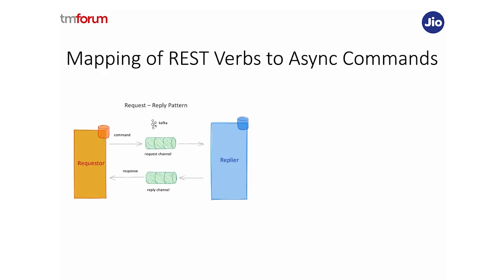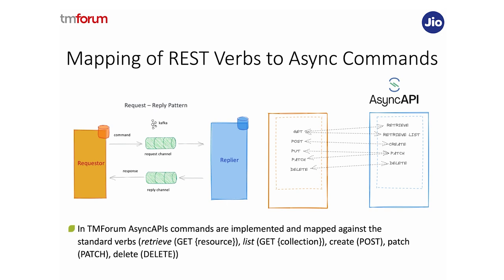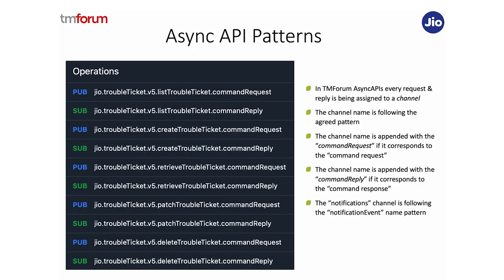How is that implemented? We've taken the request-reply pattern. There is a request topic for commands to be pushed from the requester to the replier. The replier can then asynchronously respond back on the reply channel and the response can be picked up. We have taken the standard five HTTP REST operations — GET, POST, PUT, PATCH, DELETE — and mapped them to asynchronous commands. Each of these commands are essentially mapped to a topic.